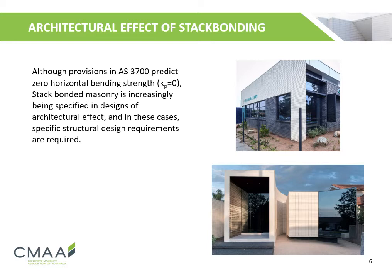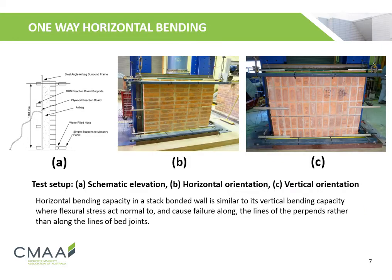In these cases, specific structural design requirements are required. The University of Newcastle has conducted research on the horizontal bending capacity of stack bonded walls. The schematic elevations show a simply supported stack bonded wall, where a steel angle frame surrounds the wall while an airbag is placed in front to measure displacement. Figures B and C show the horizontal and vertical orientations respectively.